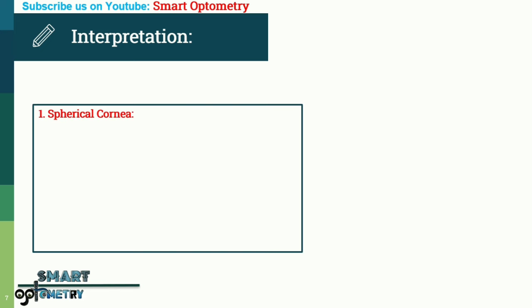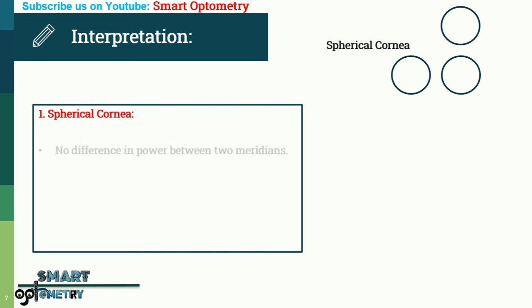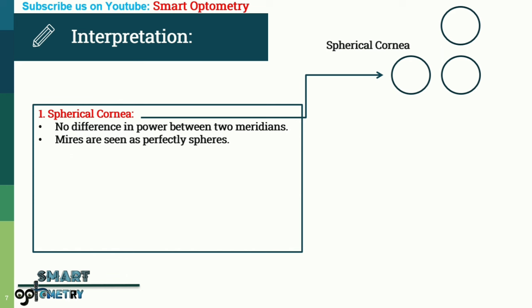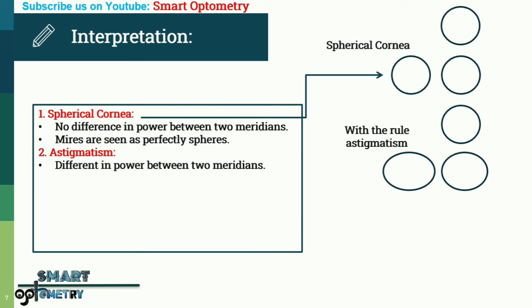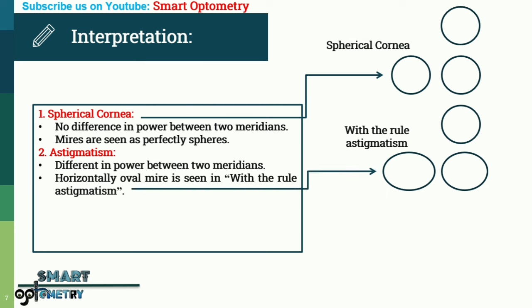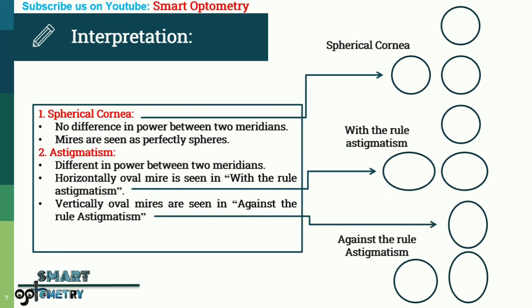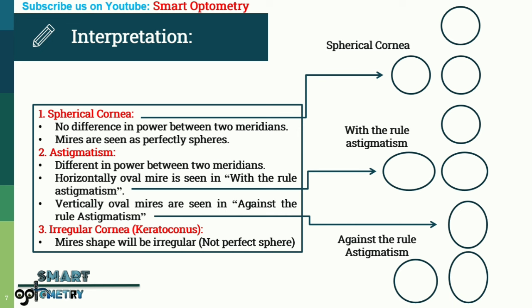Interpretation of keratometer: (1) Spherical cornea — there will be no difference in power between the two meridians and mires are seen as perfectly separated. (2) Astigmatism — there is a difference in power between the two meridians; horizontal oval mires are seen in with-the-rule astigmatism and vertical oval mires are seen in against-the-rule astigmatism. (3) Irregular cornea — seen in keratoconus; the mire shape will be irregular and not perfectly separated.